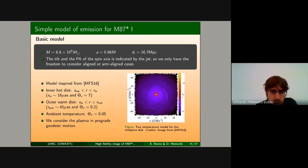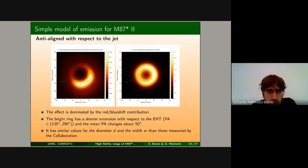With this simple model we have obtained these images. This one corresponds to the anti-aligned case. On the left I'm showing the image having the gravitational magnification and the redshift/blueshift correction, and to the right it is only the gravitational magnification effects. We find from these images that the effect of the emission is mainly dominated by the Doppler contribution, but we have a bright ring that is short in extension and with a mean position angle that is shifted with respect to the observed image by about 50 degrees. But the values for the diameter and the width of the bright sector are essentially the same as the observed image.